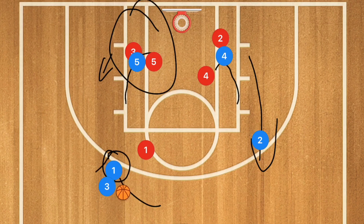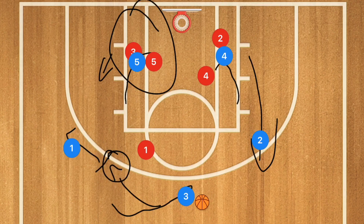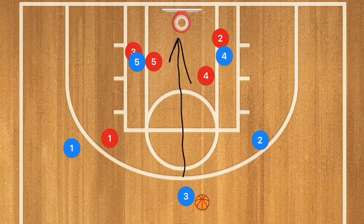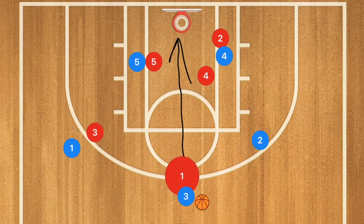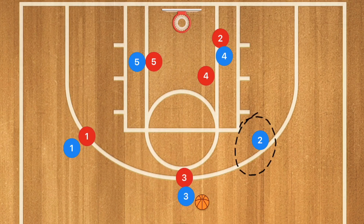This is going to be a dribble handoff between player 1 and player 3. Once player 3 gets that ball he is going to dribble towards the point, and player 1 is going to continue out towards that left side. If player 3 is open to take that shot, I want him to take that shot. If he is not open and the defender got through or there was a switch, I want player 3 to look over to player 2. This is a fantastic option for player 2 to get an open shot — he can get an open three-point or mid-range shot.